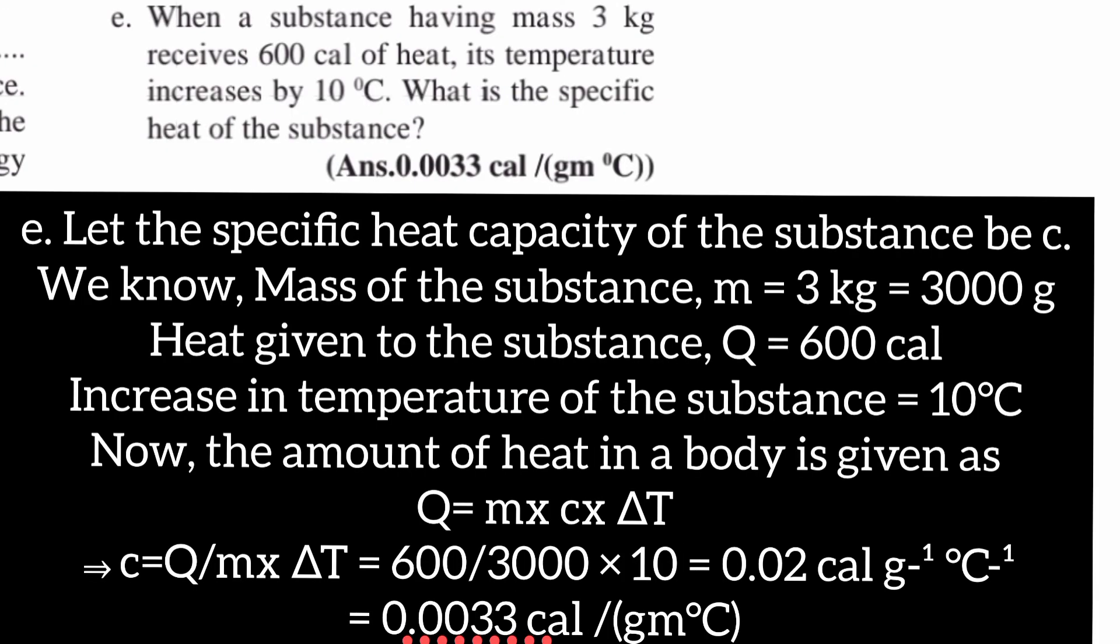E: When a substance having mass 3 kg receives 600 calories of heat, its temperature increases by 10 degree Celsius. What is the specific heat of the substance?